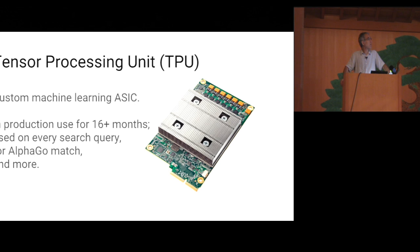For example, we have at our disposal something that we call a Tensor Processing Unit or TPU. This is a special purpose, custom machine learning ASIC that we use for TensorFlow. It's been in production for over 16 months now, and it's being used at Google for every search query. It was used for the AlphaGo match, and it has a variety of other applications.